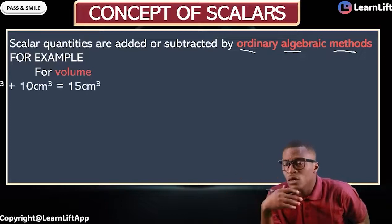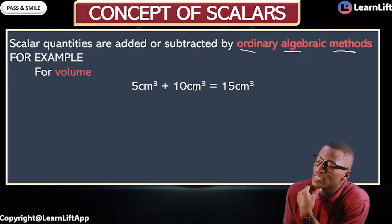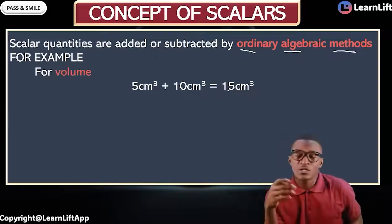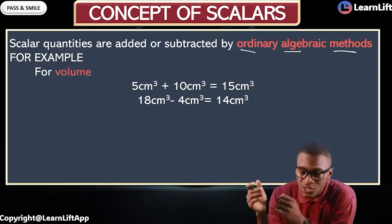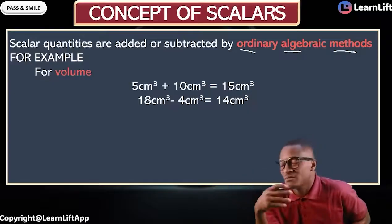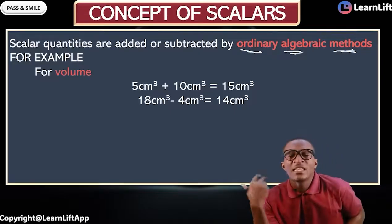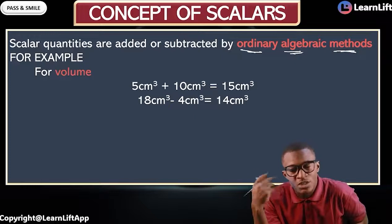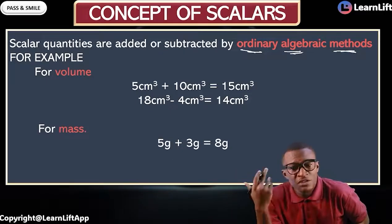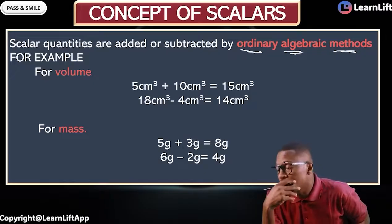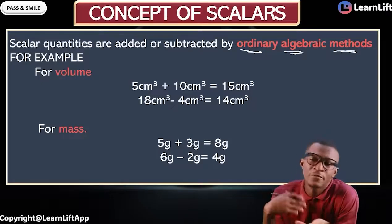For example, volume is a scalar quantity. We're told to add: five centimeter cube plus ten centimeter cube equals fifteen centimeter cube. Or eight centimeter cube minus four centimeter cube equals four centimeter cube. How do we get those answers? We just add or subtract them. For mass: five grams plus three grams equals eight grams, or six grams minus two grams equals four grams — ordinary answers by ordinary addition or subtraction.